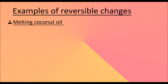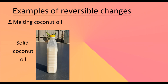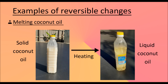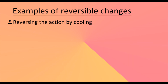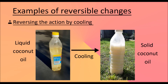Melting coconut oil. My mum keeps her bottle of coconut oil outside in the backyard on a sunny day before she starts cooking, so that she can turn the solid coconut oil into liquid coconut oil. Reversing the action by cooling turns liquid coconut oil back into solid coconut oil.